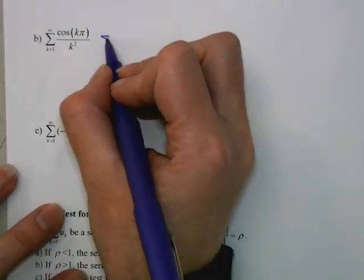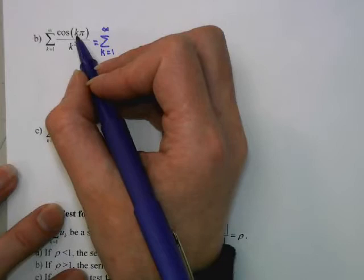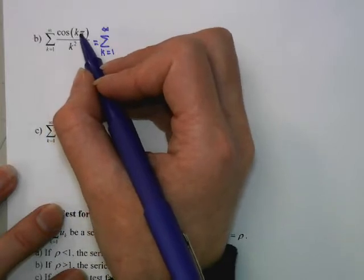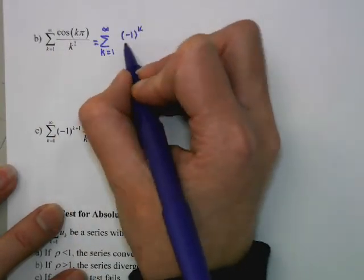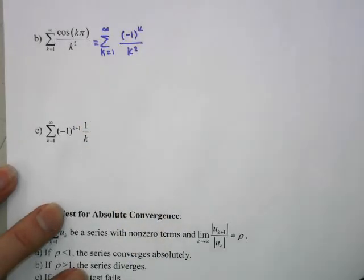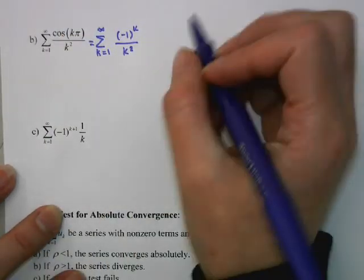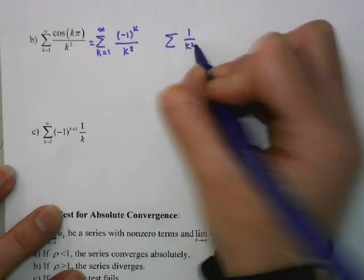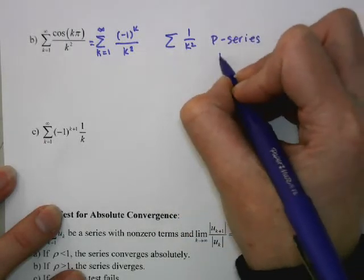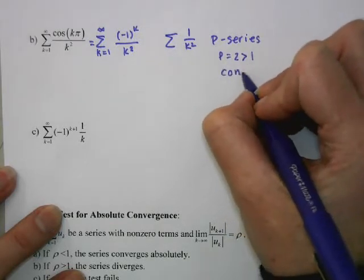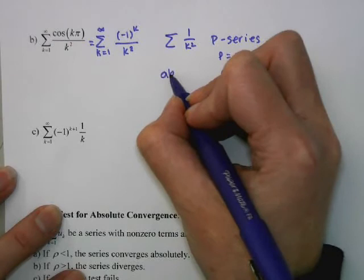Another example: cosine(kπ) — if we plug in k=1 we get cos(π) = −1; if k=2 we get cos(2π) = 1. So this is just (−1)^k — another way to write an alternating series using cosine or sine. We're looking at whether 1/k² converges: it's a p-series with p=2, which is greater than 1, so this series converges absolutely.